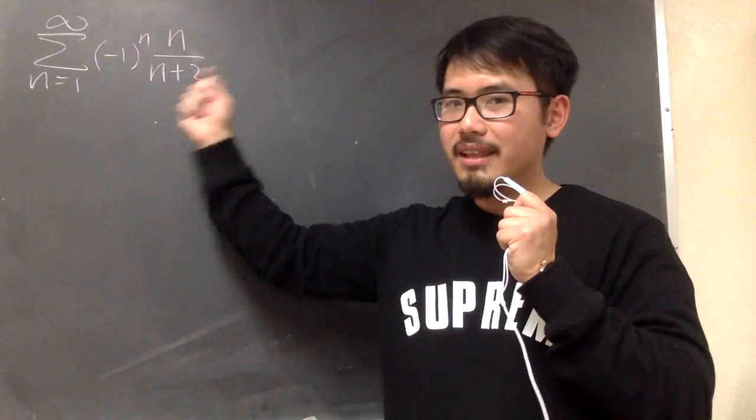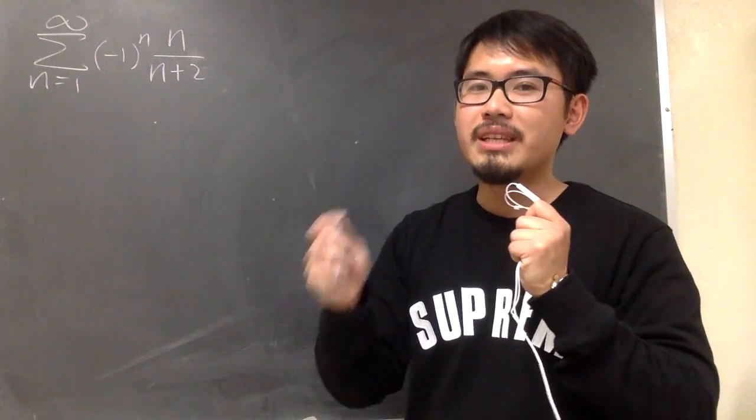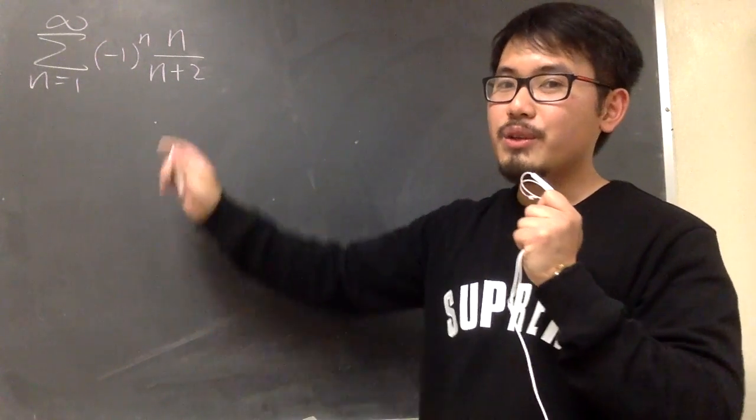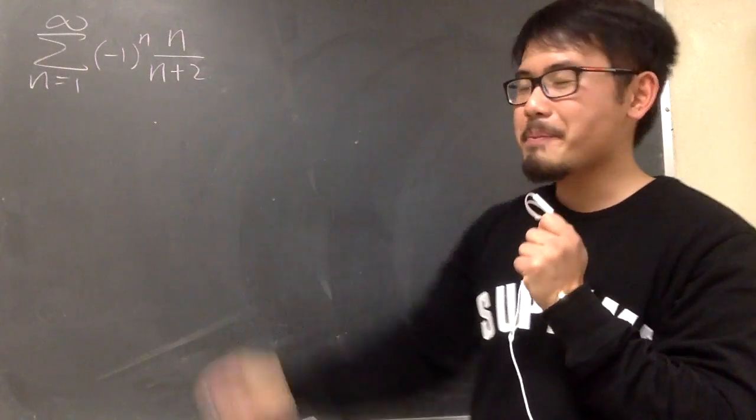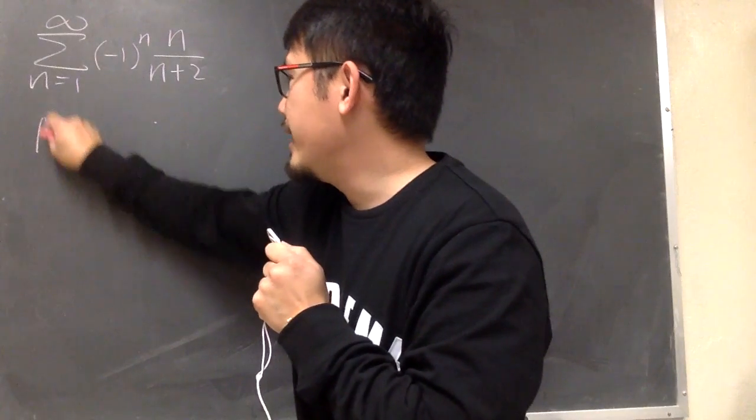And to show you that this is divergent, we are going to use the test for divergence. Even though this is an alternating series, we are going to show this is divergent. And to do so, we take the limit.